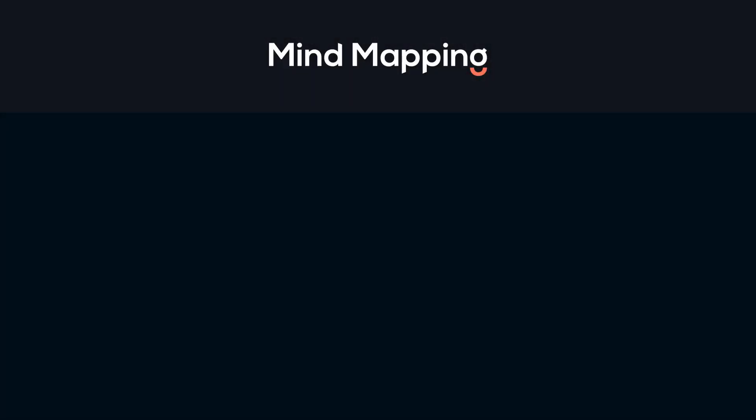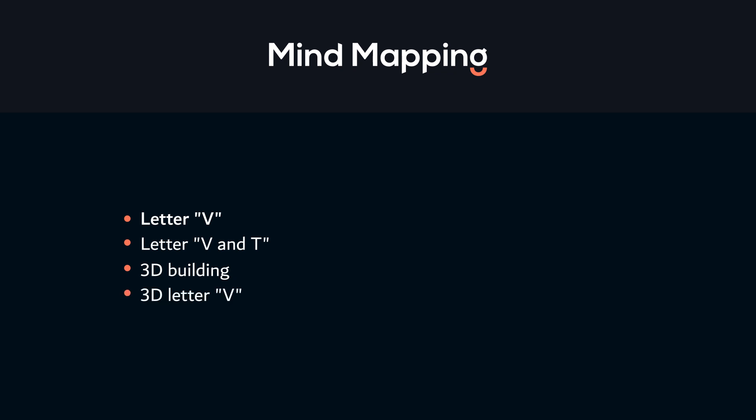Using these points as a reference, let's continue with the mind mapping process. To design our logo we can either use the initial letter V, or the combination of letters V and T. Since the company provides high quality 3D virtual tours, we can use a 3D view of a building or a 3D letter V. As an alternate, we can use any imaginary virtual enclosure — a circle is the most suitable option as it provides a complete 360-degree visual, or we can use a circular arrow swoosh.